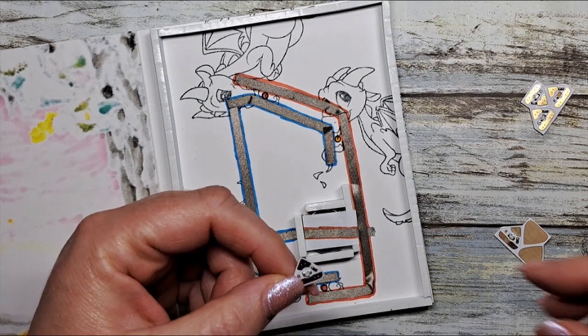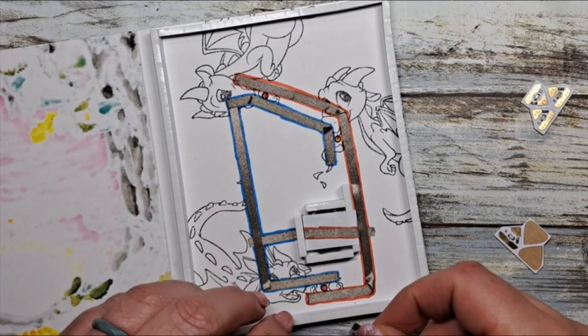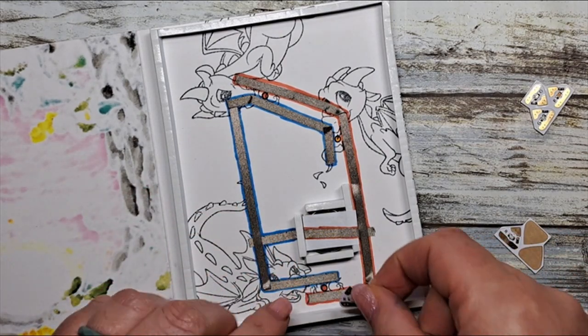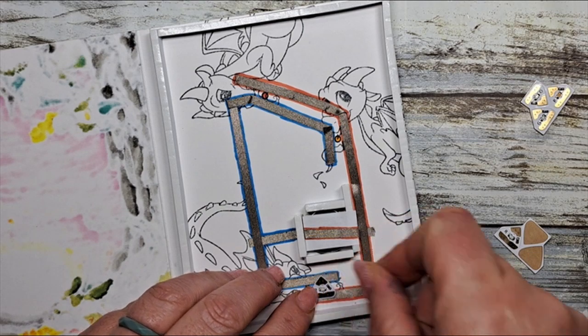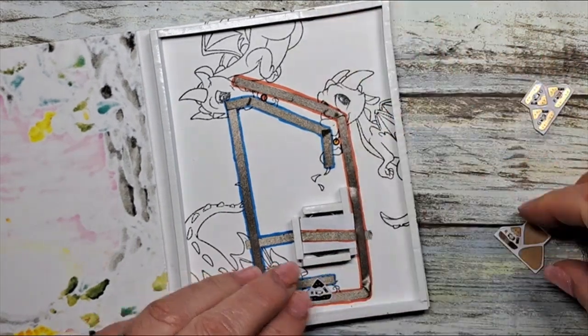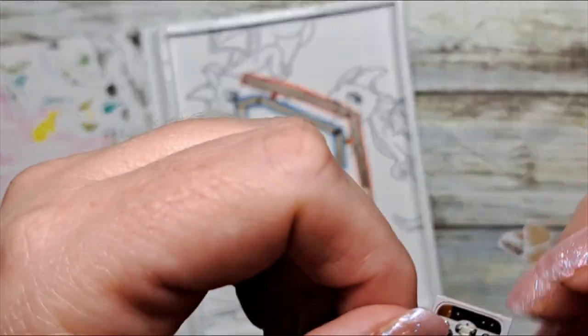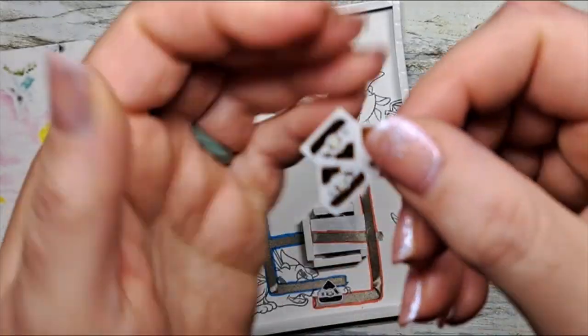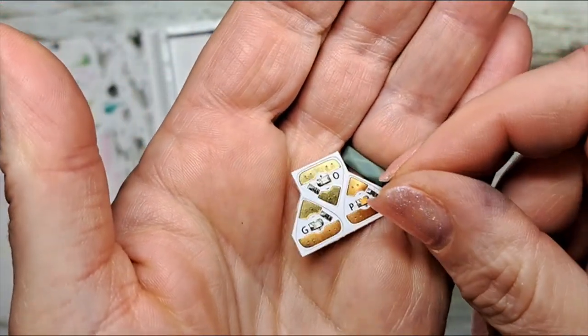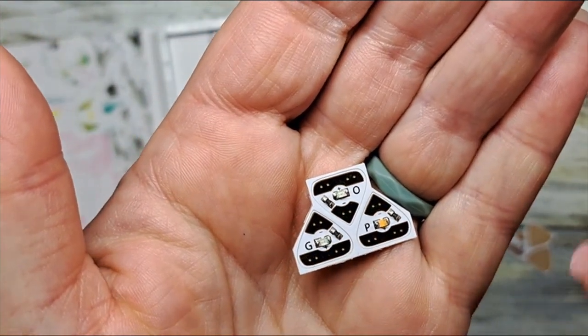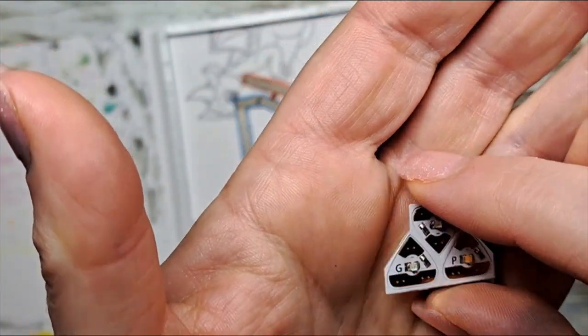The last and final step of our process is to add in our LED light stickers. Each sticker is clearly labeled with a color: O for orange, P for pink, G for green, R for red, B for blue and Y for yellow. Today we're using reds and oranges.